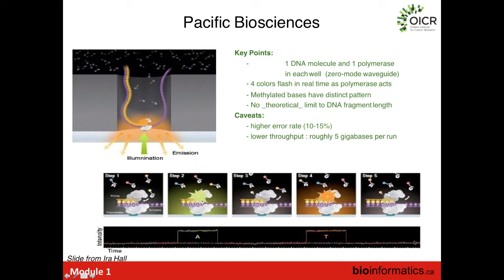Rather than having cycle-by-cycle chemistry, this is essentially happening in real time as the DNA polymerase is copying the DNA. Each individual base is sequenced much more rapidly — we don't have to wait 10 to 20 minutes to sequence the next base. It's going to get sequenced whenever it diffuses in and is captured by the DNA polymerase.